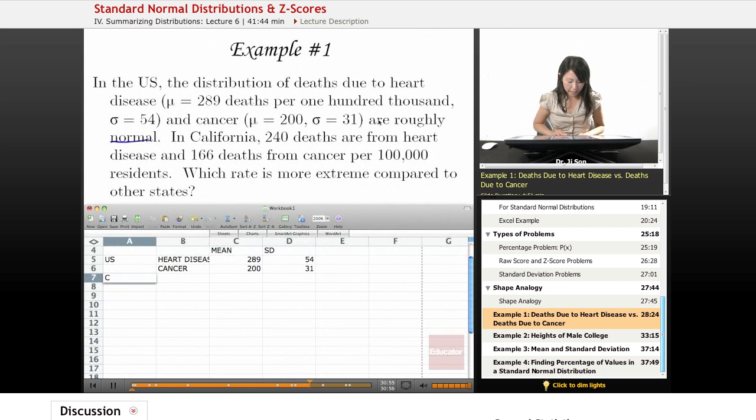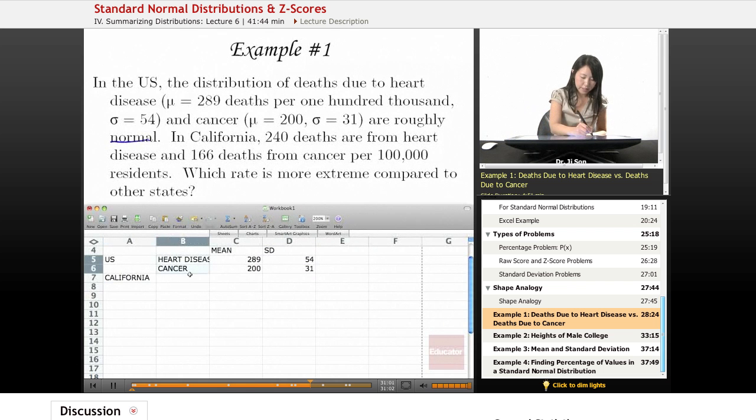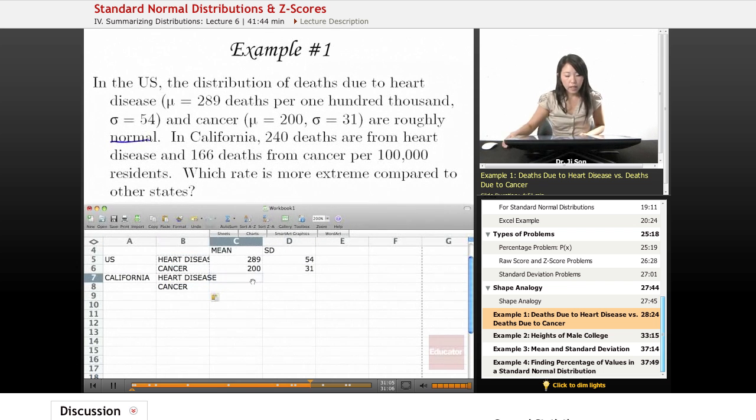And so here's California. Heart disease and cancer. In California, the mean is 240 and 166.